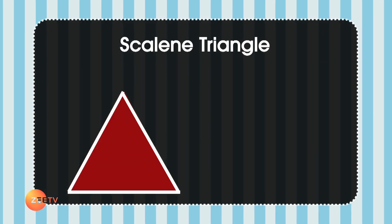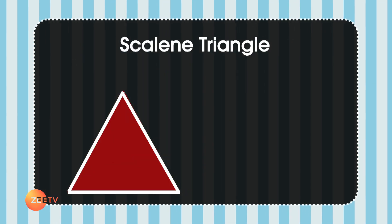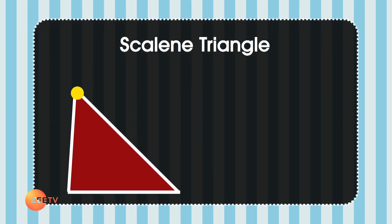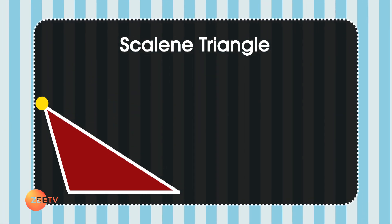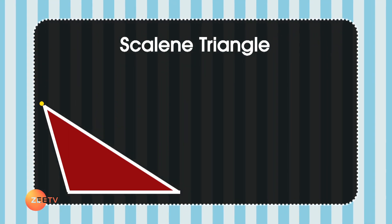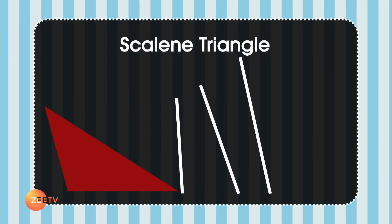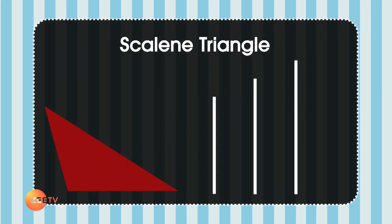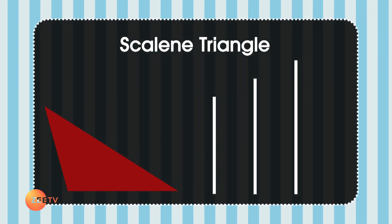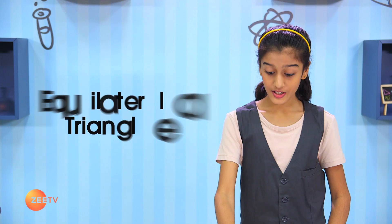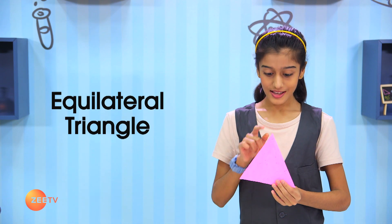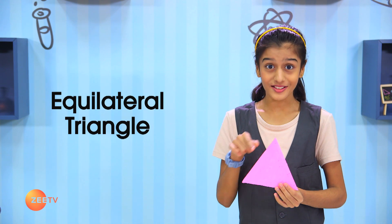To see the third possibility, let's move the top of the triangle to the left. Now all the sides are different. If all three sides of the triangle are different sizes, it's called a scalene triangle. An equilateral triangle has three equal sides.